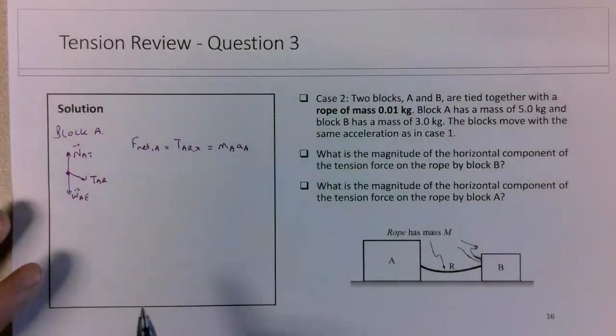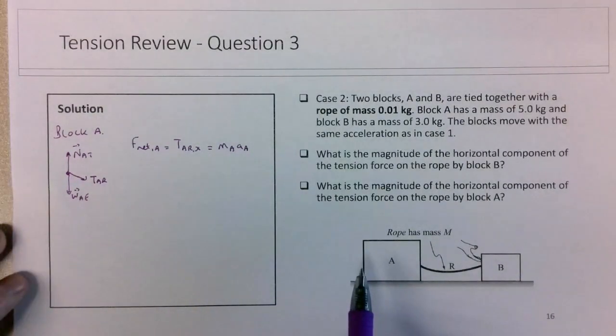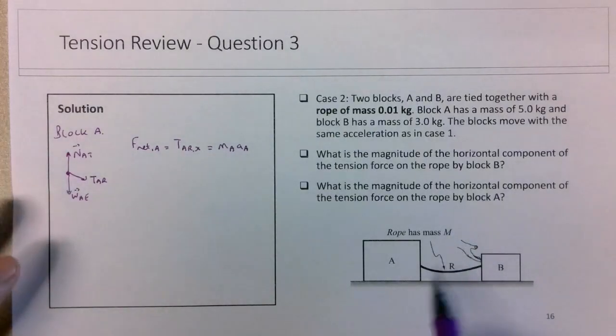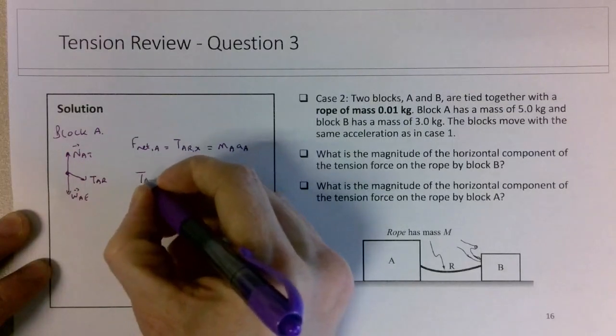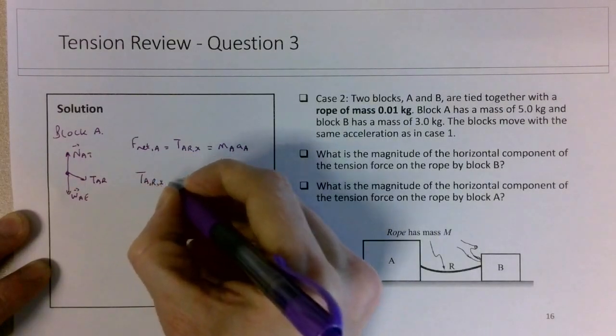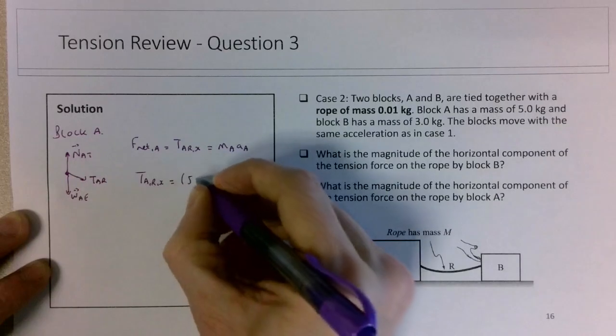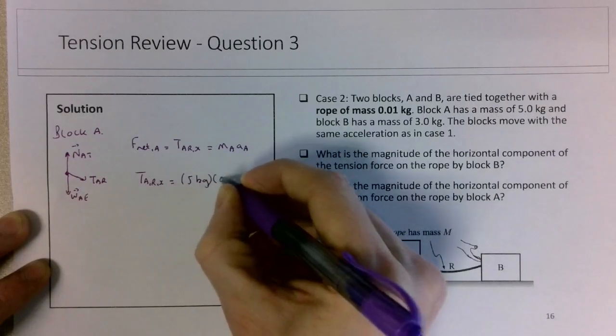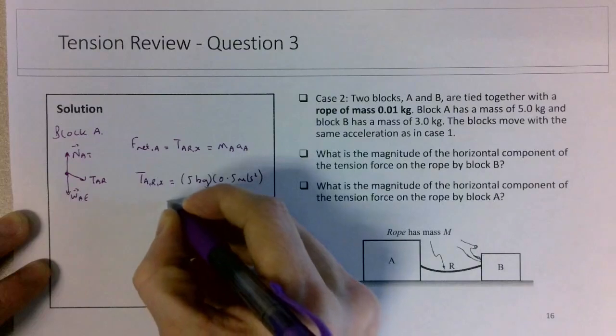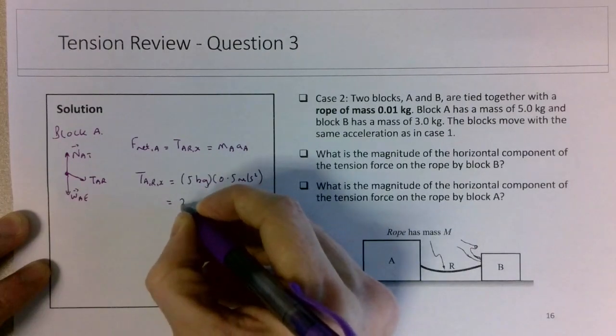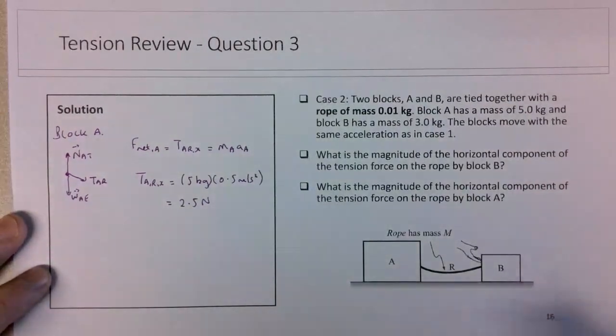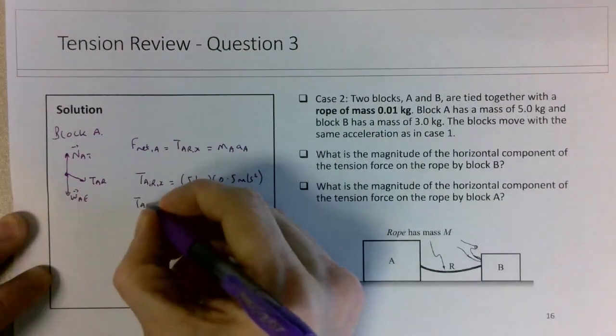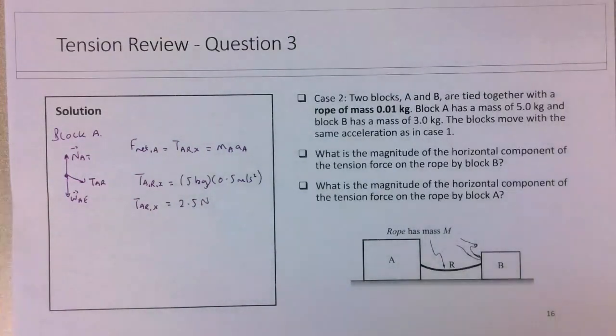Again, from the previous two questions, we have stated that the accelerations in both cases are the same. So the tension force on A by the rope in the x direction is still the mass of A, 5 kg, times the acceleration of the system, so this is still 2.5 newtons. And that is the same as it was when the rope was 1 kg.